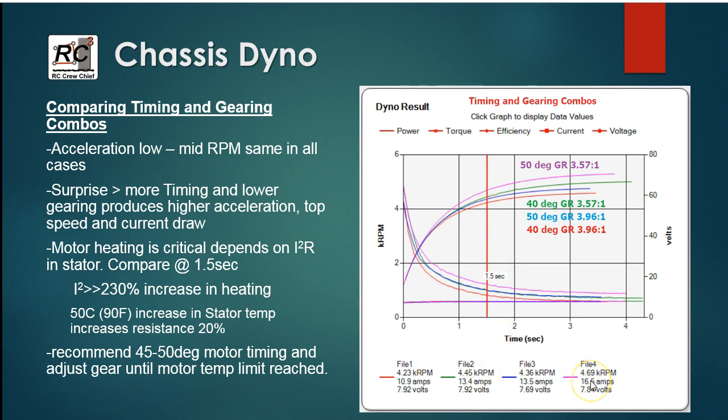So if we just take a quick comparison here at one and a half seconds and compare all three of these, the big guy here, he's drawn 16 and a half amps, and the low end of the range is drawing 10.9. So if we do that little calculation, I squared for each of those motors and divide one by the other, you get a 230 percent increase in the heating effect, the power loss or heat loss in the motor itself.